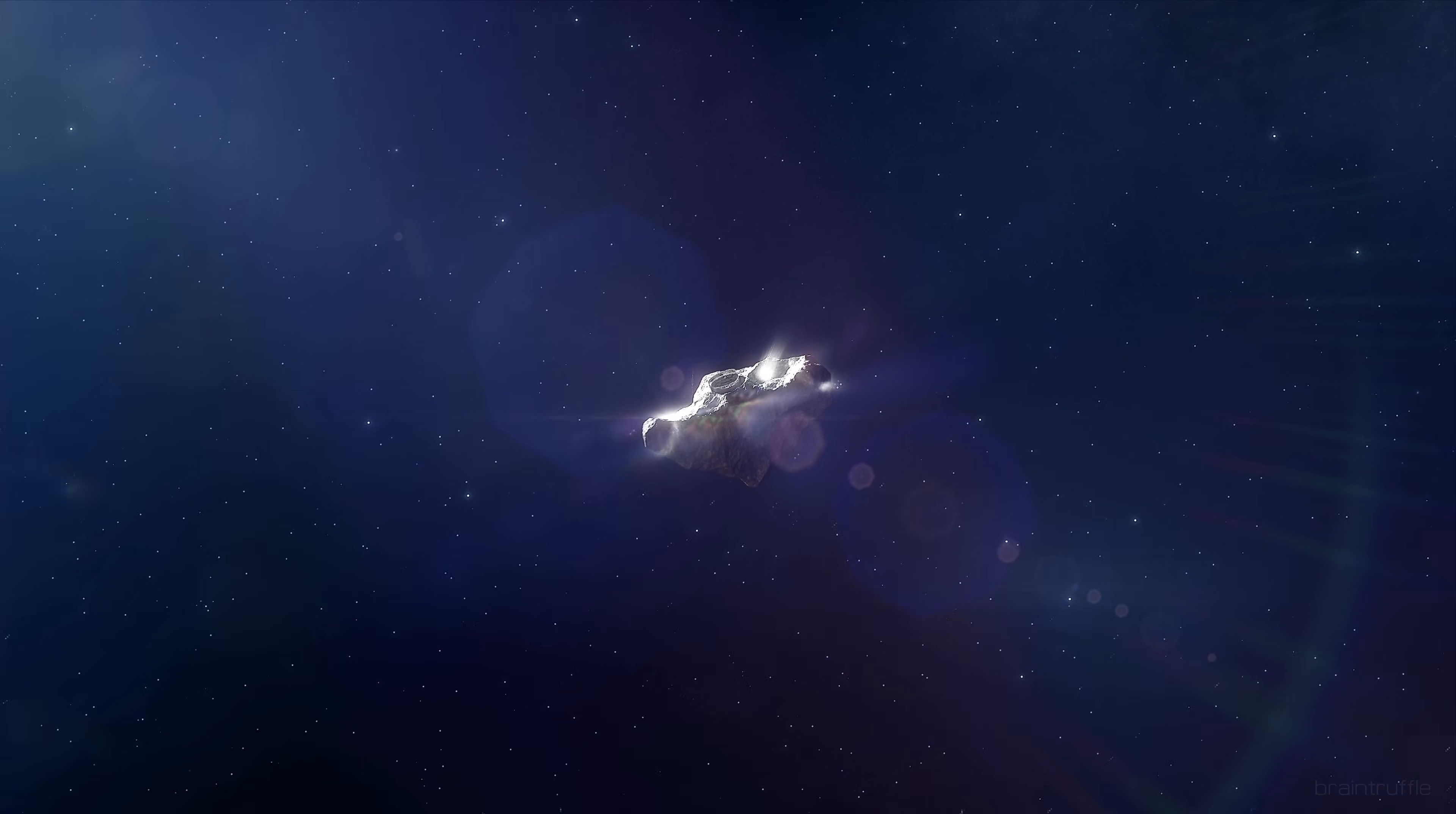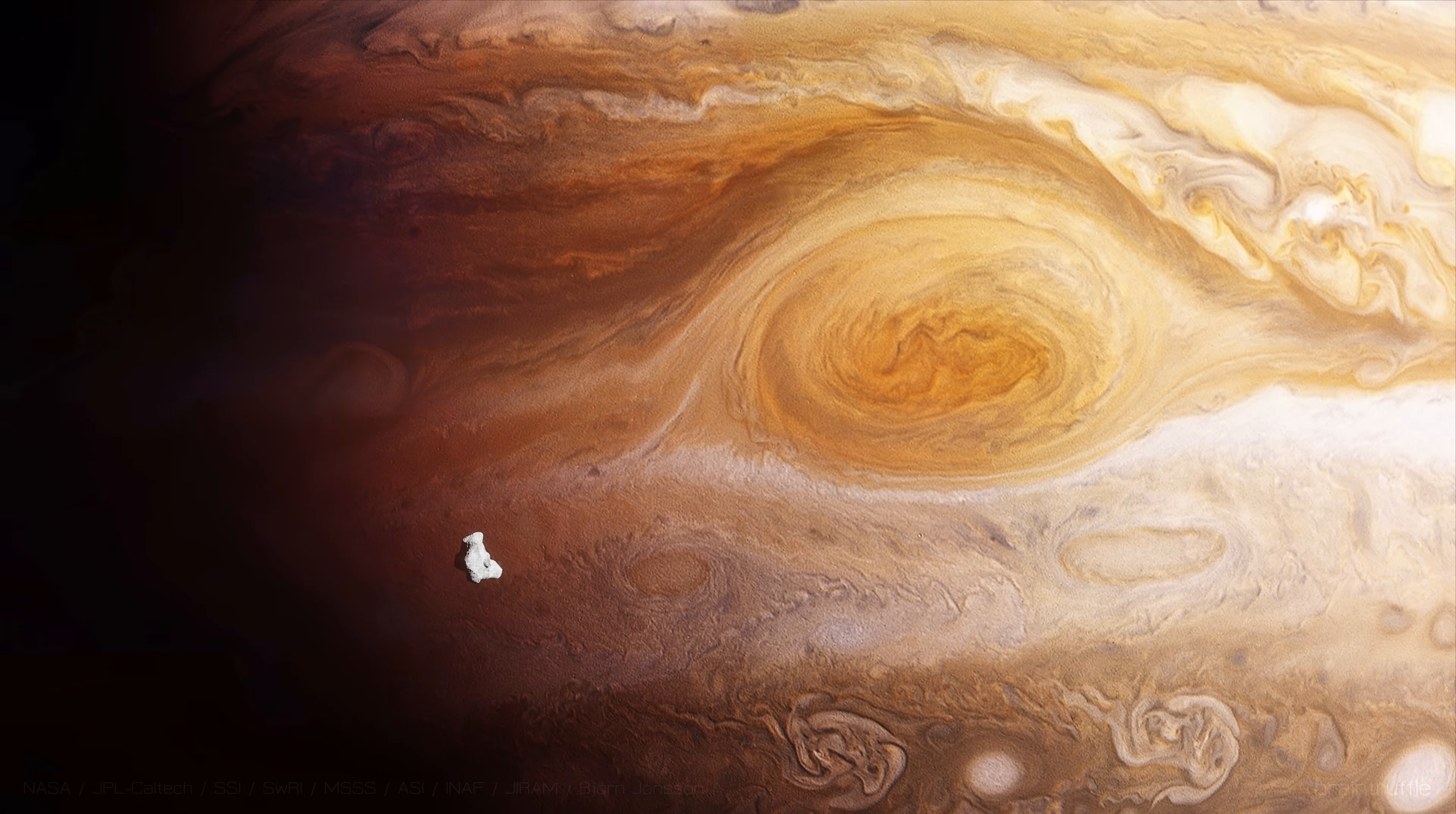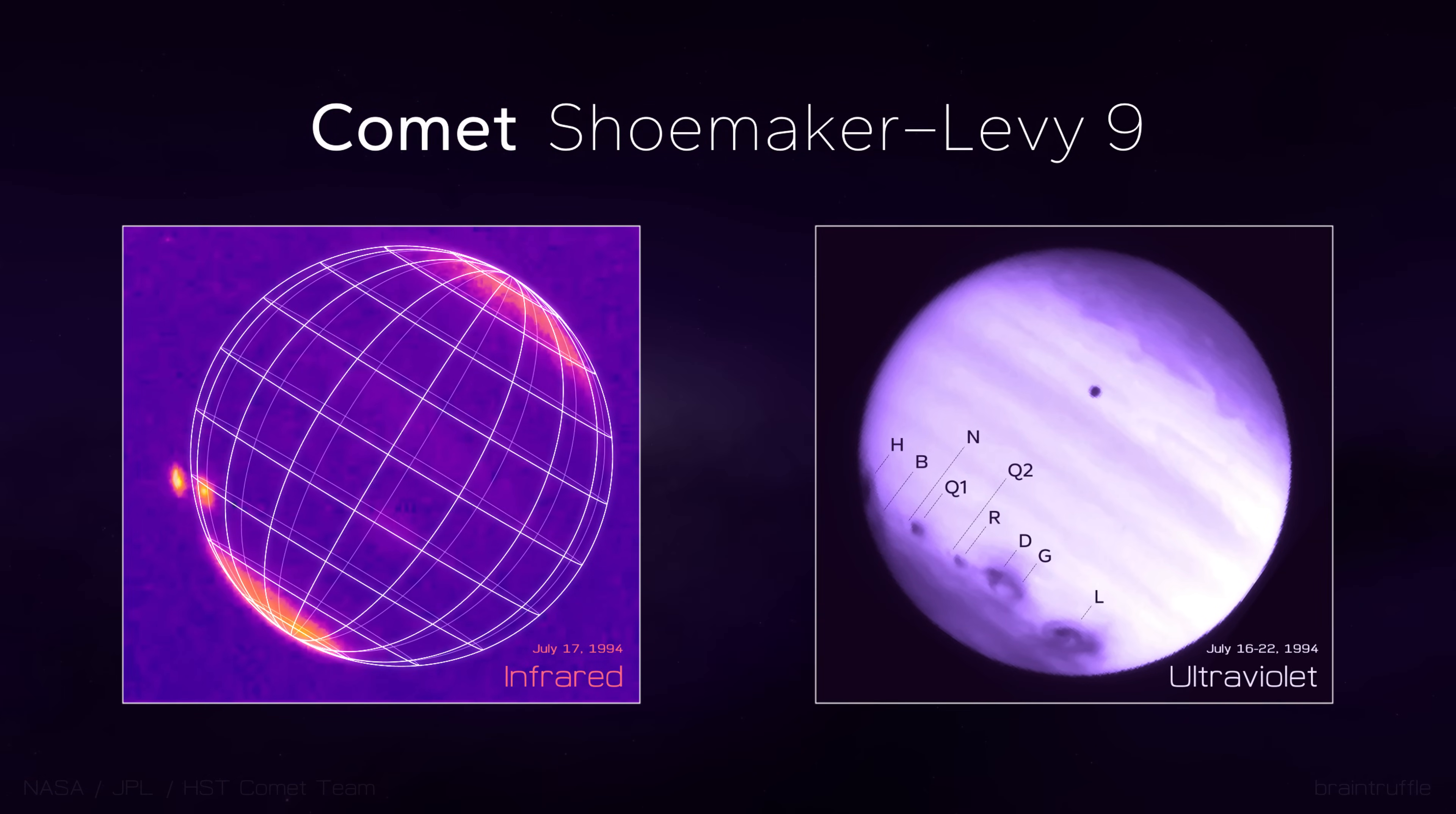On July 16th, 1994, comet fragments the size of the Colosseum up to Rome's inner city started showering down onto planet Jupiter. And then, with an energy release of several hundred times the world's nuclear arsenal, the atmosphere was scarred for months, marking the fate of Shoemaker-Levy 9. And this brutal event didn't come unexpectedly.